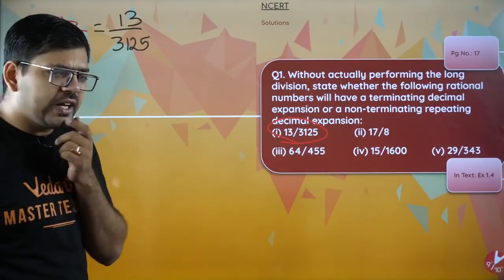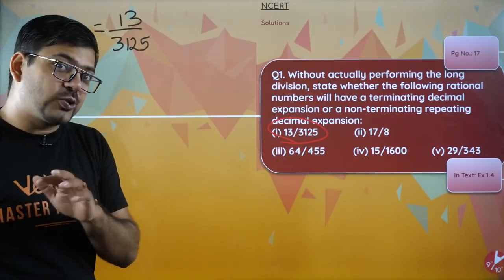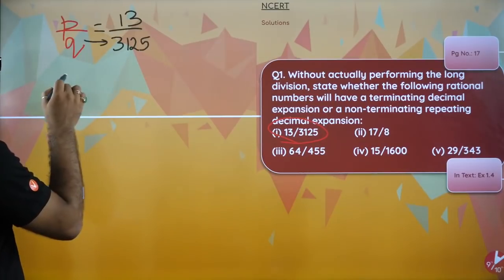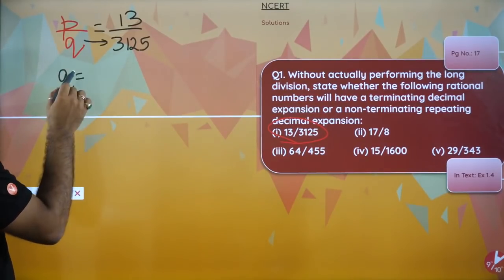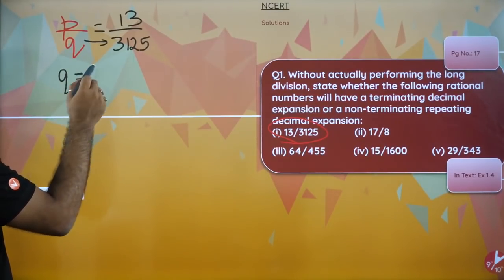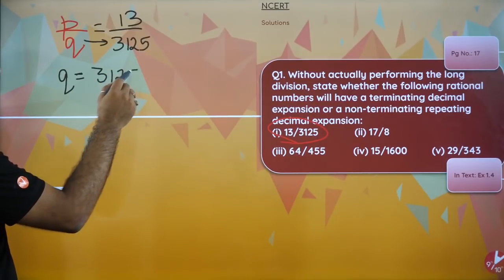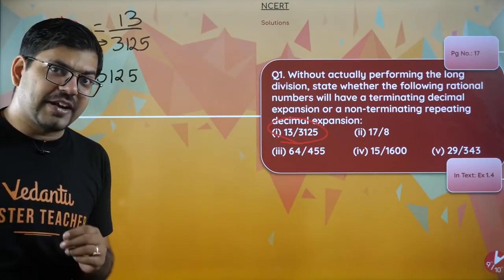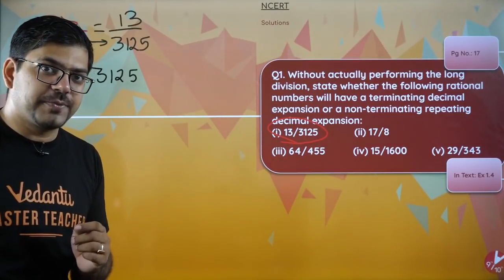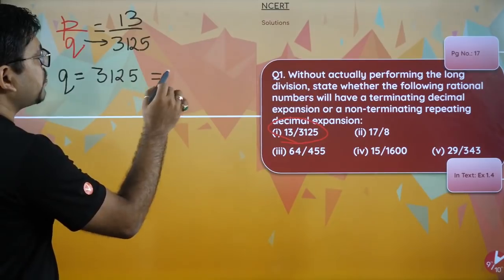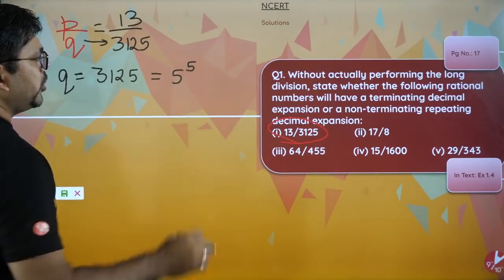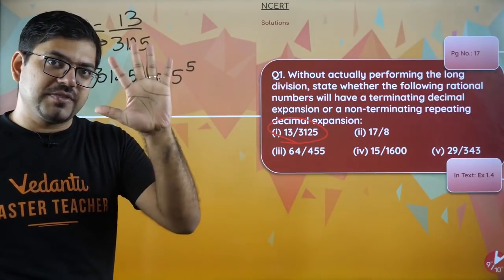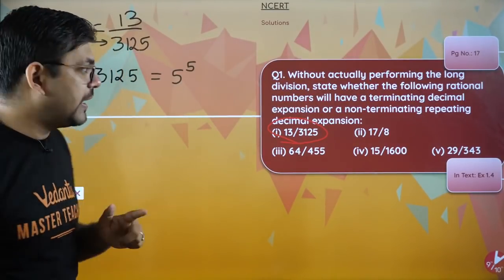If this is not going to get cancelled, just concentrate on the denominator. If you concentrate on the denominator, q is 3125. You need to do the prime factorization of 3125, so if you do the prime factorization you will get 5 raised to power 5, which means 5 times 5.